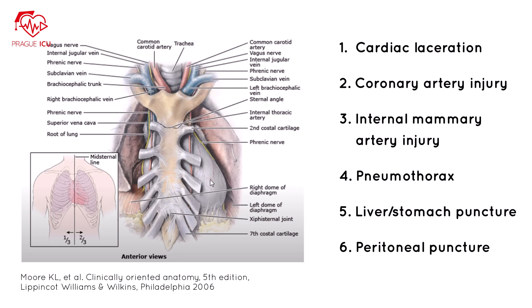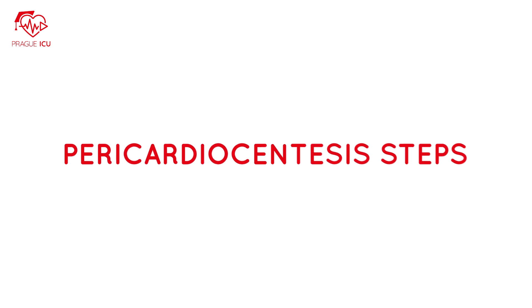During pericardiocentesis, clinicians must be attentive to the important anatomic structures in the way of the puncture needle. Structures of major interest include cardiac laceration, coronary artery injury, internal mammary artery injury, pneumothorax, liver or stomach puncture, and peritoneal puncture.